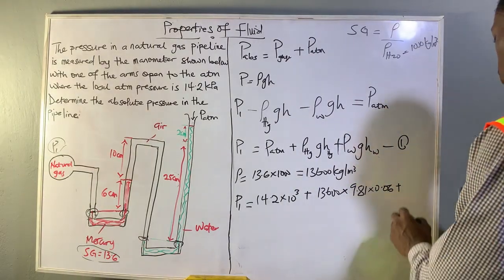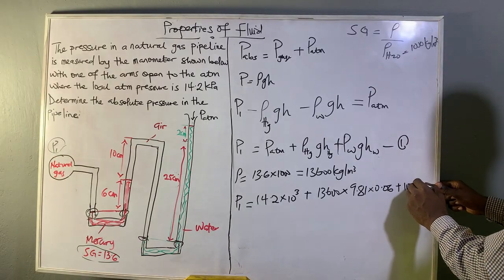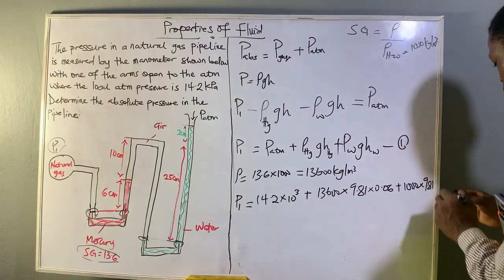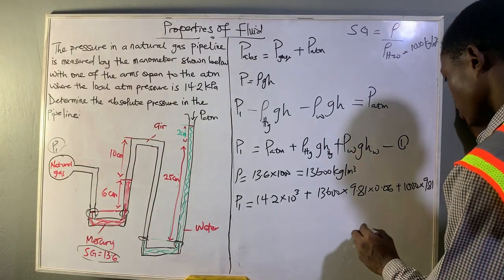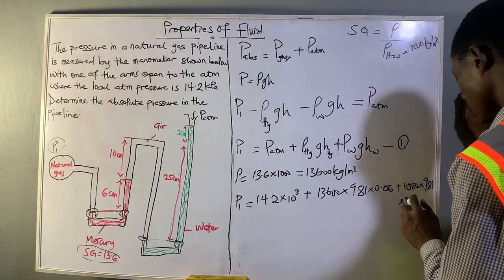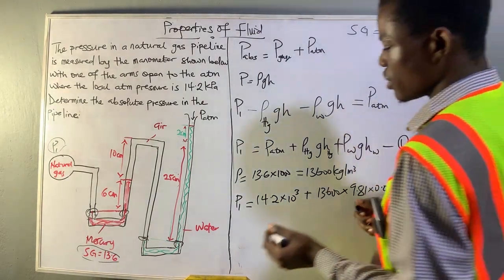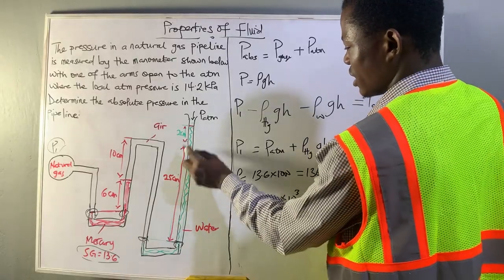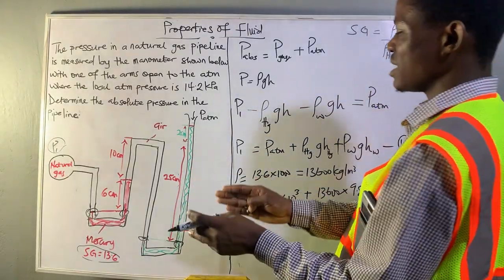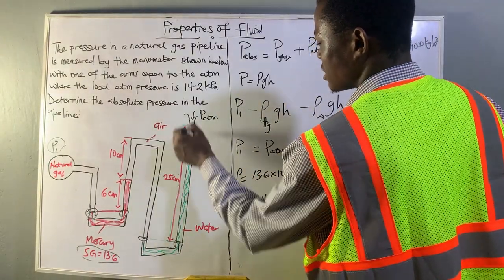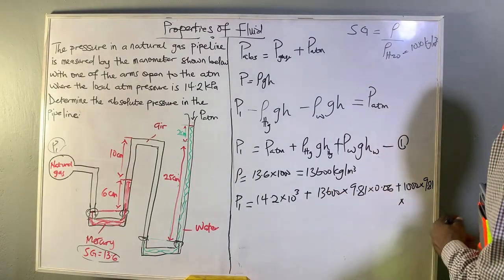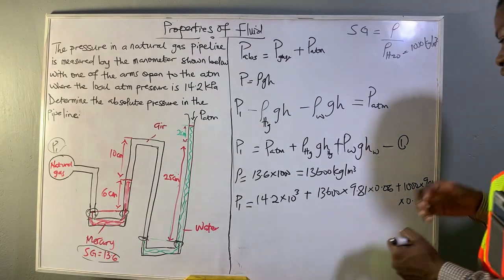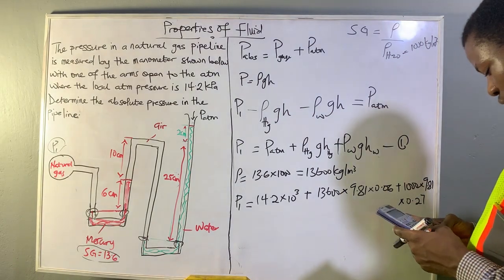For the water term: density of water is 1000 kg/m³, acceleration due to gravity is 9.81 m/s². The water column height combines two sections since the column is fully filled with water, adding them together to get 27 centimeters, which converts to 0.27 meters. Now we compute to get our answer.